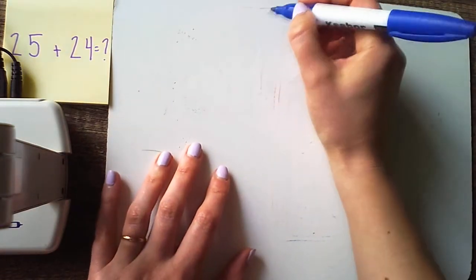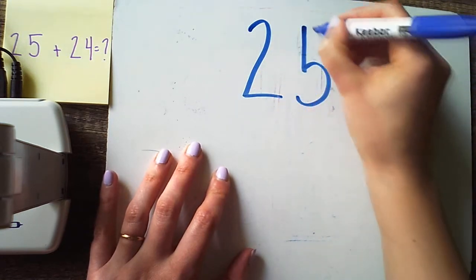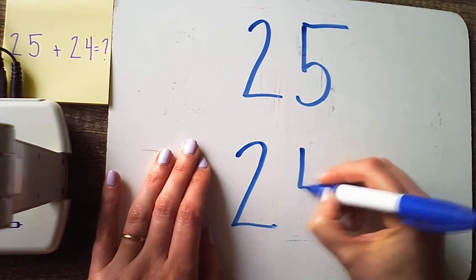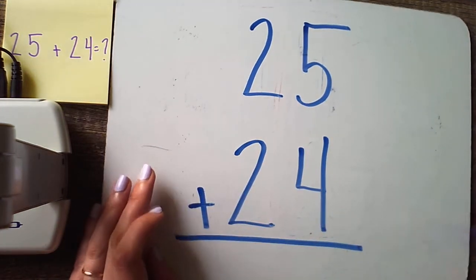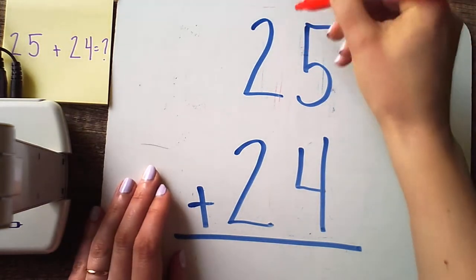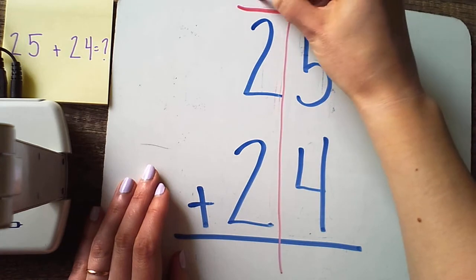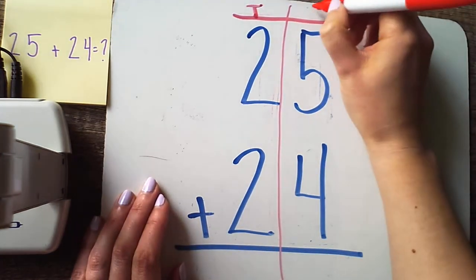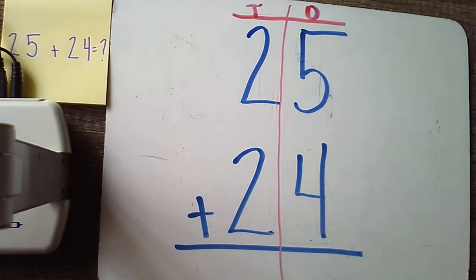I'm gonna take my horizontal addition problem twenty-five plus twenty-four and make it vertical. By making it vertical or up and down, I'm making it much easier for myself to organize my numbers into a place value mat. I'm going to insert my place value mat, labeling T for tens and O for ones. Our job today is to use objects to help us solve addition problems where we're adding two-digit numbers to more two-digit numbers.